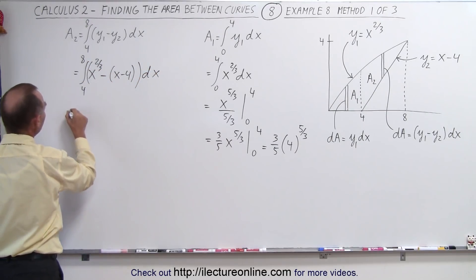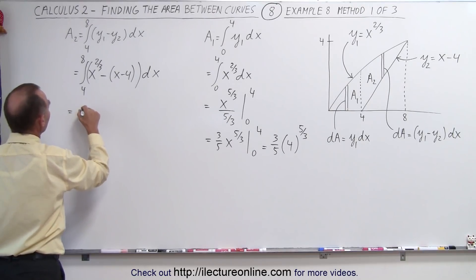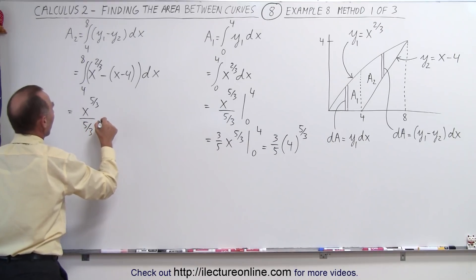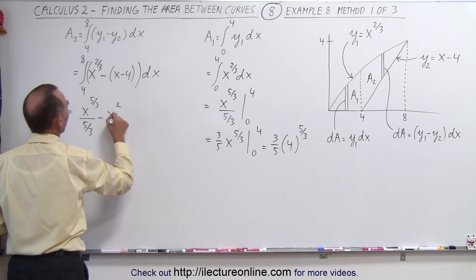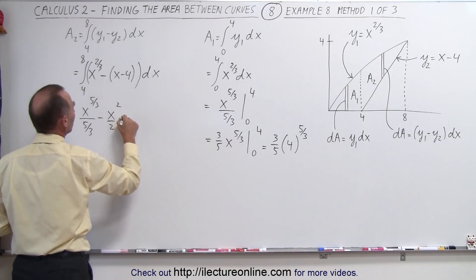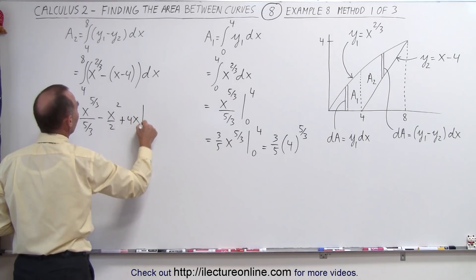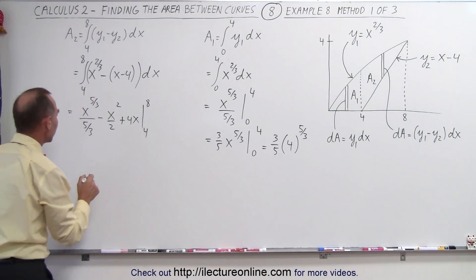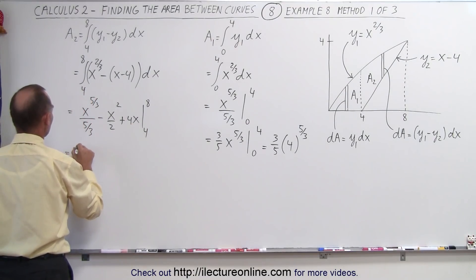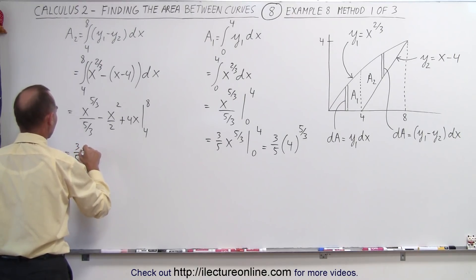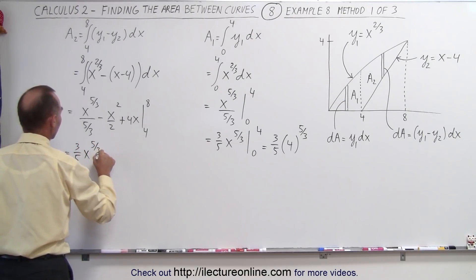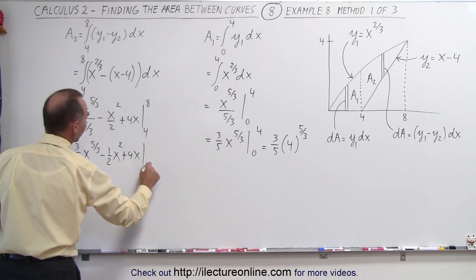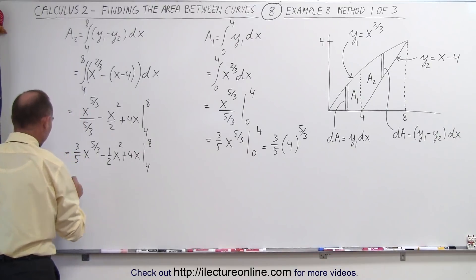Integrating that, we get x to the five-thirds divided by five-thirds, minus x squared over 2, and then the minus times minus gives plus 4x, evaluated from 4 to 8. Simplifying the coefficient, this is three-fifths times x to the five-thirds, minus one-half x squared, plus 4x, evaluated from 4 to 8.